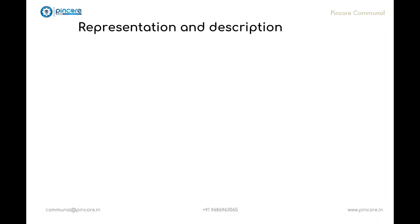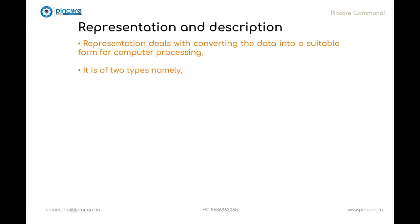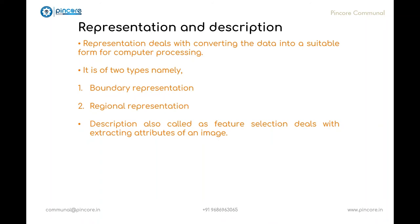Now we will see the next step, that is representation and description. Representation deals with converting the data into a suitable form for computer processing. And it is mainly of two types because of which decision should be made initially whether we want to represent the data as a boundary or we have to represent it as a complete region. In the two types, we will see the first type, that is boundary representation. It is used when the focus is on external shape such as corners or inflections of an image. In the second type, that is regional representation, it is used when the focus is on internal properties such as texture or skeletal shape of an image. Description is also called as feature selection, which deals with extracting attributes of an image. And these attributes result in extraction of some quantitative information of interest. And these attributes are mainly used to differentiate one class of objects from another.